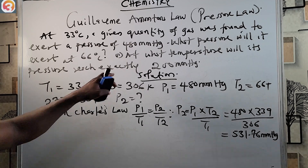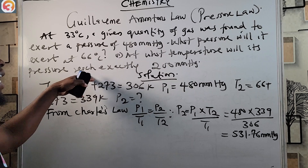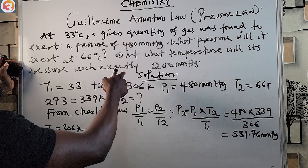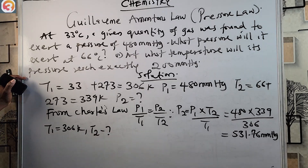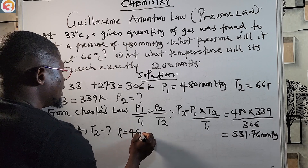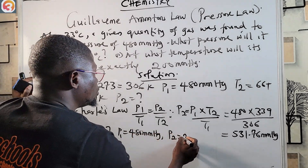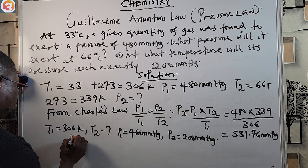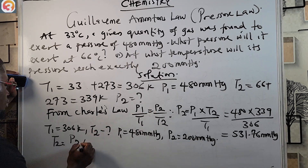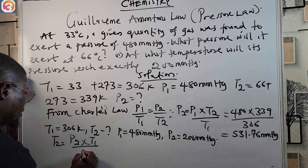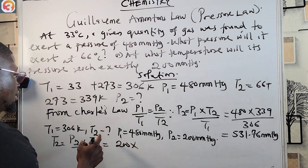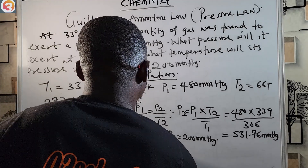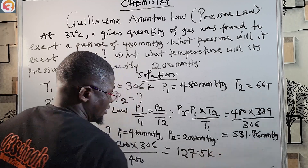For part two, we need to find the temperature T2 at which the pressure reaches exactly 200 millimetres of mercury. We keep T1 = 306 Kelvin and P1 = 480 millimetres of mercury. P2 is now 200 millimetres of mercury. Rearranging the formula: T2 = P2 × T1 / P1.